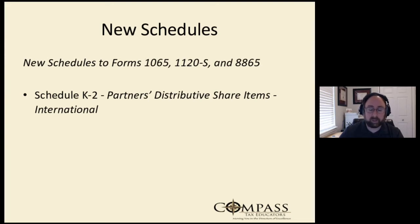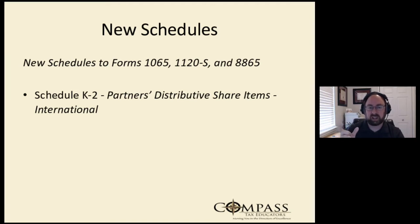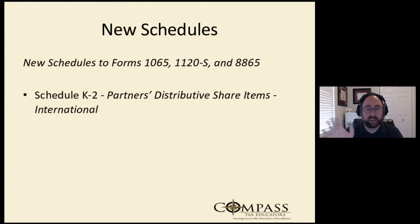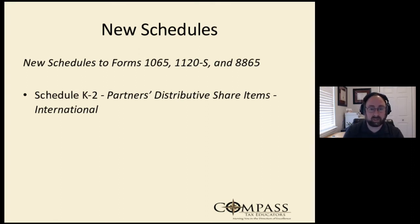So what's new? The biggest thing is Schedule K-2. The K-2 is an extension of Schedule K. What they've done is taken what was around 20 or so boxes for line 16 on Schedule K and blown it out to 19 pages. Each line gets its own page — not quite that bad — but what they were finding is that the reporting on Schedule K line 16 was insufficient for the new requirements that have come about in the last six years.